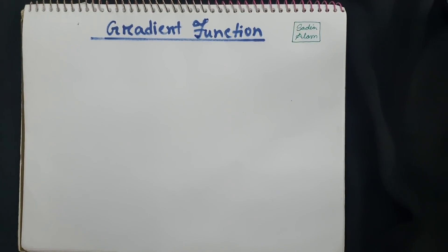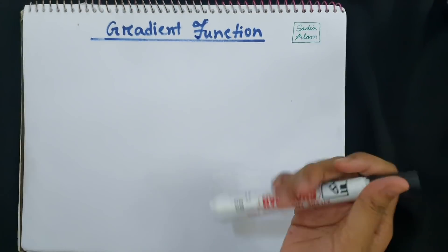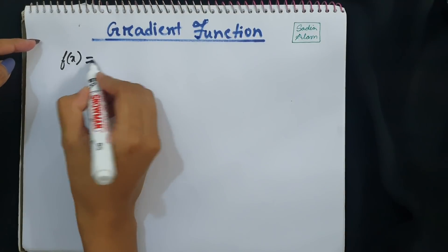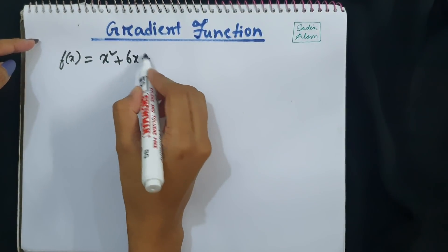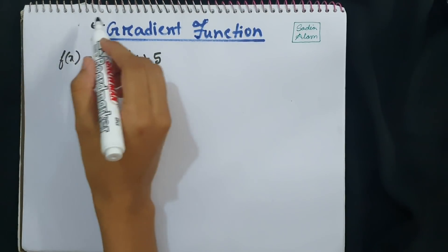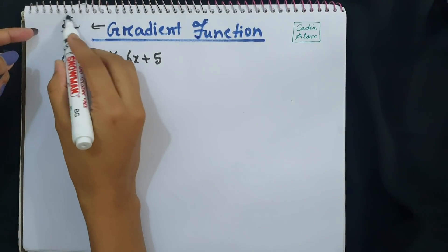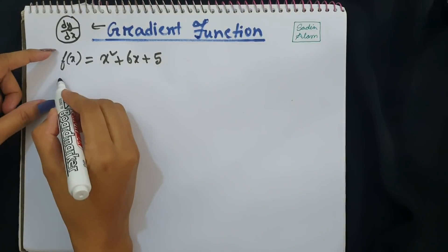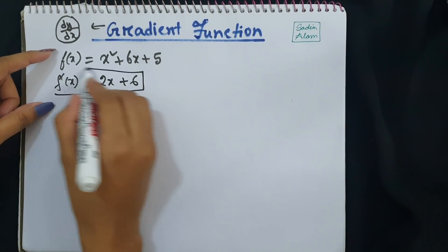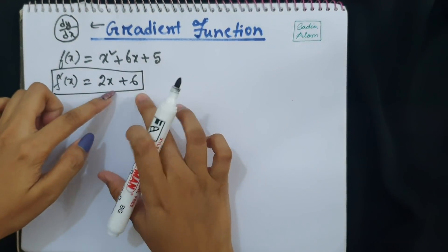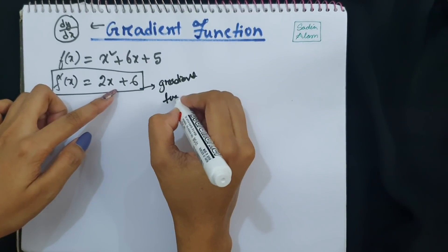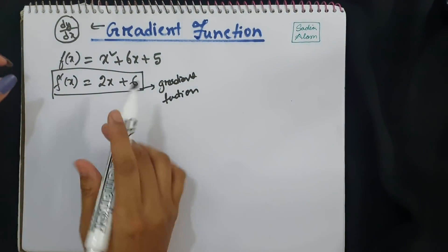In this video I will explain how to find the gradient function of a curve and how to sketch it. Suppose we have f(x) = x² + 6x + 5. The gradient represents the slope of the curve, that is dy/dx. If we differentiate this equation, the result is 2x + 6. This is the equation which represents the gradient of the curve — that is your gradient function.